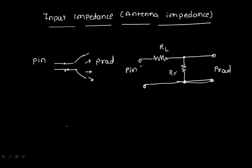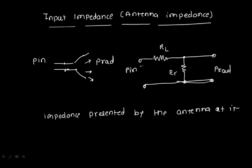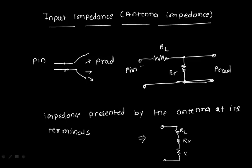The input impedance of an antenna is the impedance presented by the antenna at its terminals. Drawing the equivalent circuit, we have Rr (radiation resistance), Rl (loss resistance), and the reactance Xa of the circuit. These components together form the antenna resistance Ra.